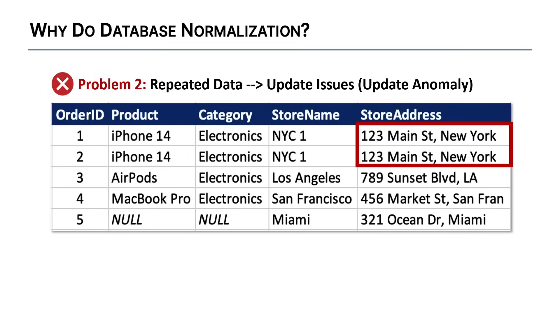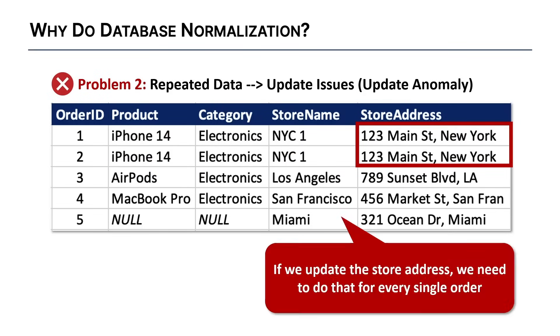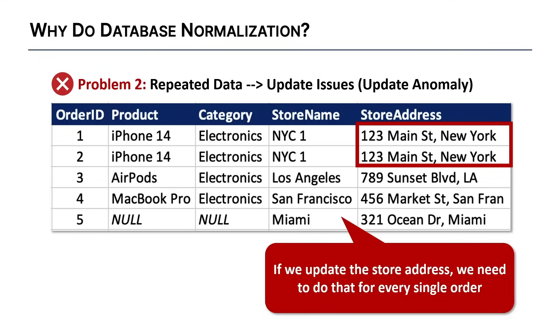The second problem has to do with repeated data and any update issues that might cause. For example, with this store address, if we update it once, we need to make sure it gets updated for every single order. In a large dataset with thousands or even millions of rows, this can easily lead to an error. The technical term for this is an update anomaly — essentially an update problem.